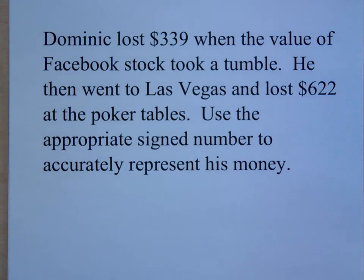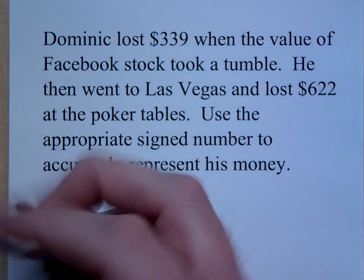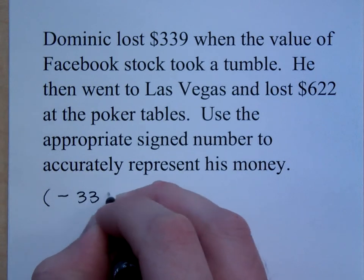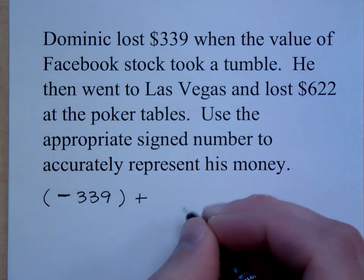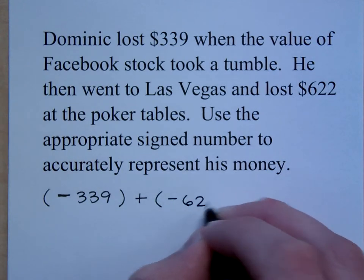I want us to use the appropriate signed numbers to accurately represent how much money he has. Let's do an estimate, and then let's get an exact amount. What kind of numbers do we have here? We have negative numbers. We have a negative $339, and then what did Dominic add to that? He added a loss, so that's a negative $622.